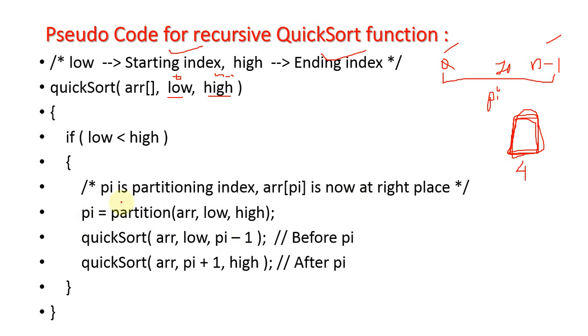Next, what you are going to do is pi equals partition of array, low, high. Something like pi value, I am going to get a pi value. Next what you are going to do is partitioning. Here it creates sublists. Suppose it is 0 to 4, so it divides into parts.